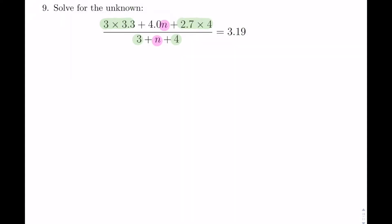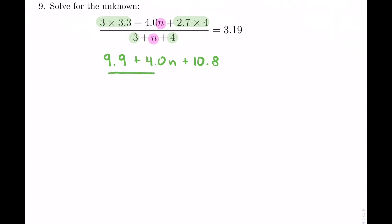I can add the 3 and the 4. So 3 times 3.3 is 9.9 plus 4.0n, plus 2.7 times 4, which is 10.8.